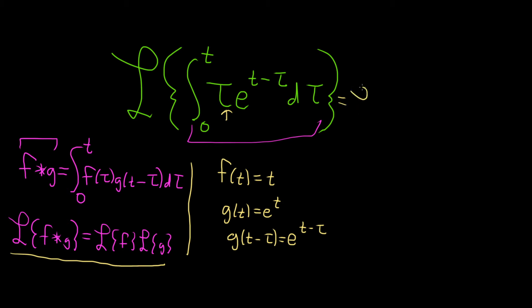So using the convolution theorem, this will be the Laplace of t, that's our f, times the Laplace of g, that's our exponential function e to the t.